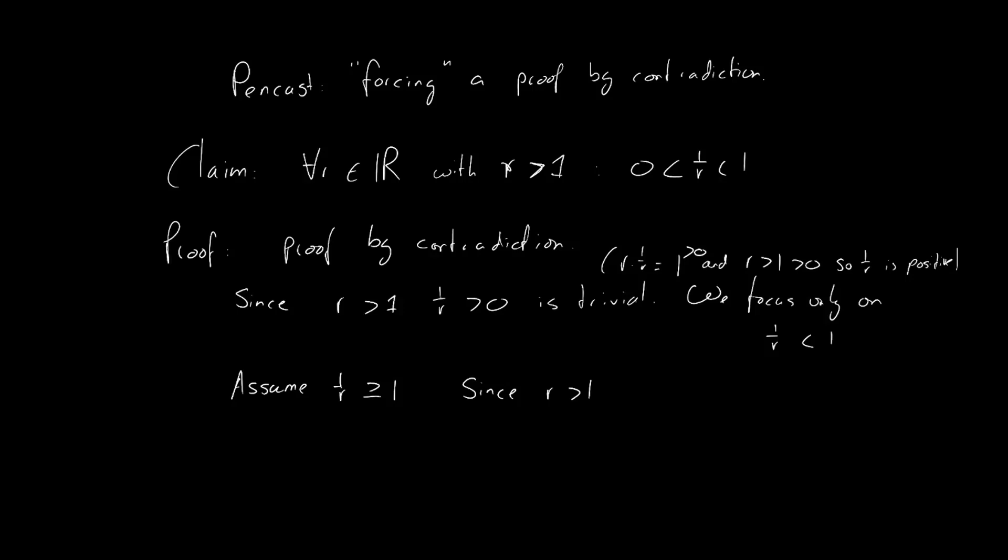Now, as we already know that r is larger than 1, we can divide both sides of this inequality by r to get 1 is larger than or equal to 1 over r without the sign flipping. The sign doesn't flip because r is larger than 1 and therefore positive.